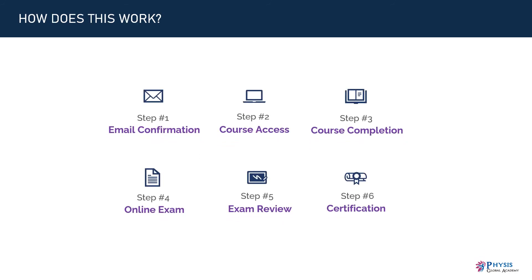Once you enroll in this training program, we will first send you a confirmation email to your registered email address, followed by course access details within the next 48 hours. You then go through all the course modules at your own pace and time, and can contact us anytime for queries. After finishing all modules, we grant you access to the online exam, which is open-book and self-paced — meaning the exam is not timed. You submit your answers and our faculty will review and issue your certification of completion along with a performance card within 14 working days.